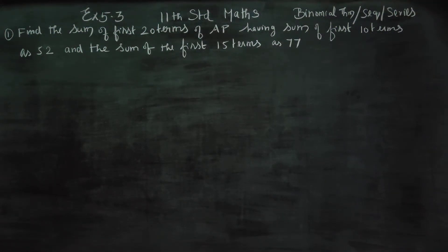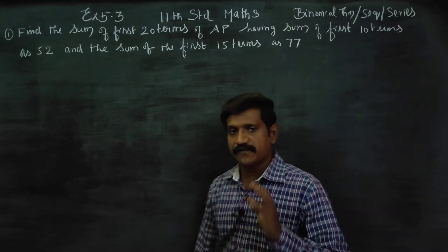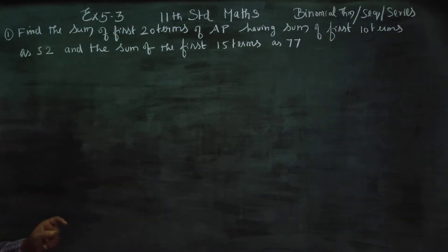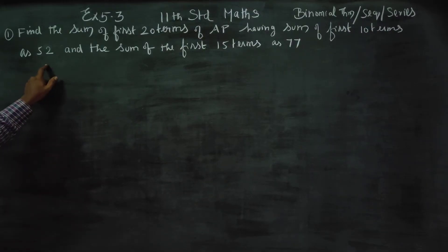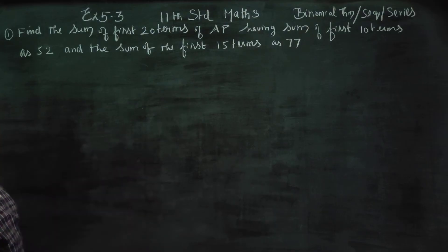Dear 11th standard students, I am Etru Karanagaran. In exercise number 5.3, sum number 1: find the sum of the first 20 terms of the AP, having sum of first 10 terms as 52 and sum of first 15 terms as 77.